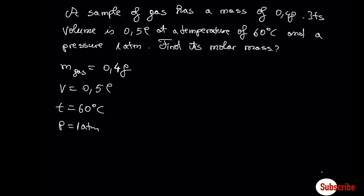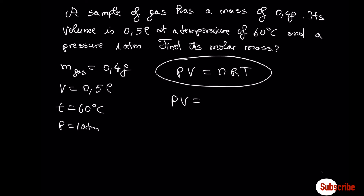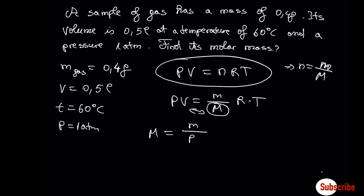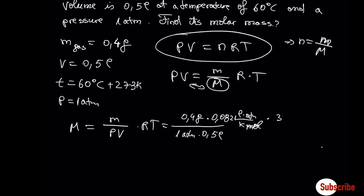Let's move to another example using the ideal gas law to find the molar mass of a gas. A sample of gas has a mass of 0.4 g, volume of 0.5 L, temperature of 60°C, and pressure of 1 atm. Find the molar mass. We write PV = (m/M)RT and solve for M. Remember to convert temperature to Kelvin. The molar mass is 21.88 g/mol.